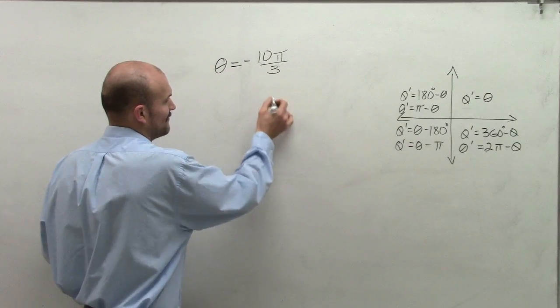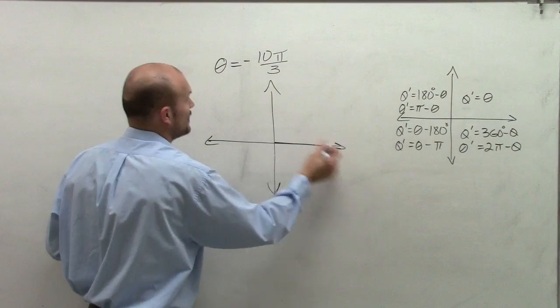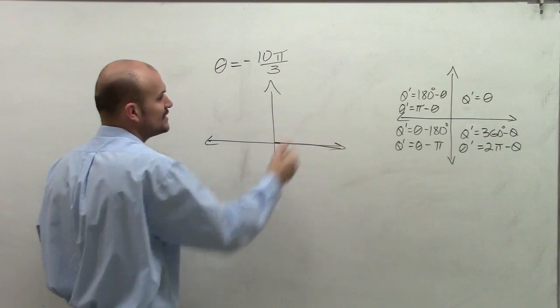So we could always look into graphing it on our standard form where we're going to have our initial side, and then we're going to follow negative 10 pi over 3 to find the terminal side.